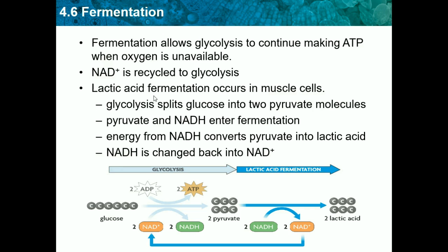Glycolysis splits glucose into pyruvate molecules. From this you get two ATP and two NADH. This is the glycolysis section of the diagram — glucose is split into two pyruvate molecules — and the NADH produced will be used in fermentation. So pyruvate and NADH enter fermentation, where energy from NADH converts pyruvate into lactic acid. This is both the end of glycolysis and the beginning of fermentation.